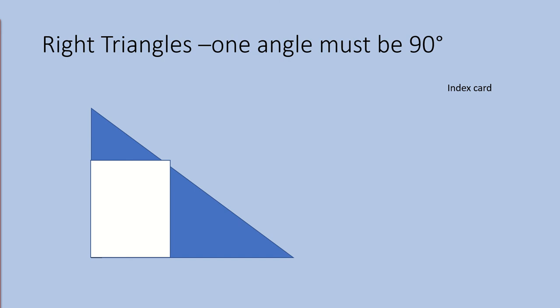Now watch as I move the index card. I am going to remove the card, but leave the shape of the index card so you can see how the corner of the index card fits perfectly in that angle. Another clue is the tiny box you see on the triangle. That little box indicates that the angle measures exactly 90 degrees. So again, this triangle is a right triangle.